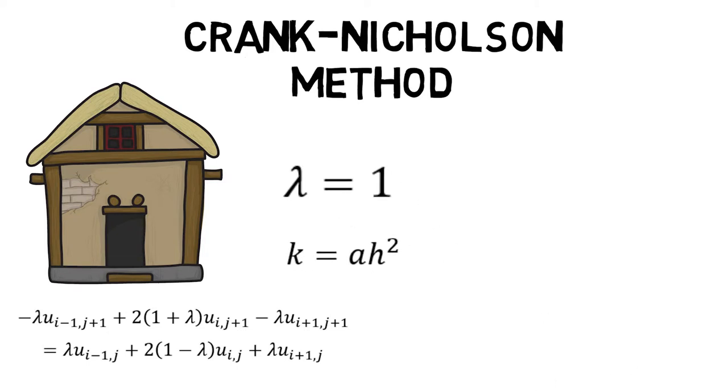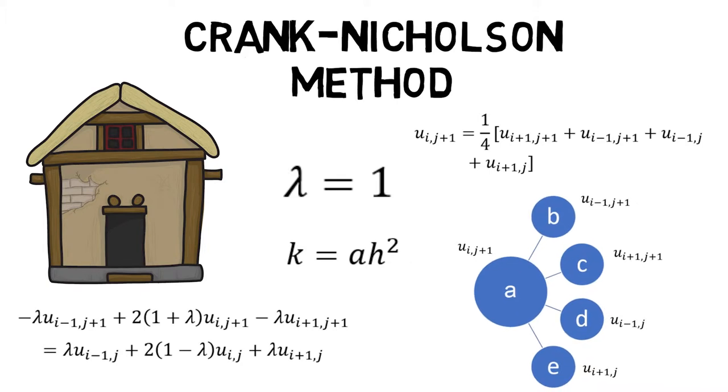When lambda equals to 1, that is k equals to ah squared, the simplest form of the formula is given by value of u at a which is the average of the values of u at b, c, d and e.